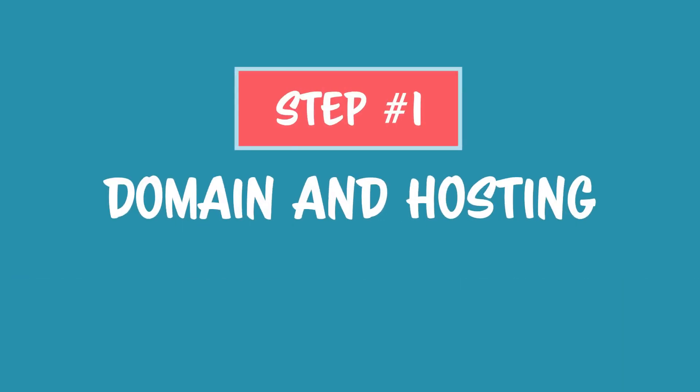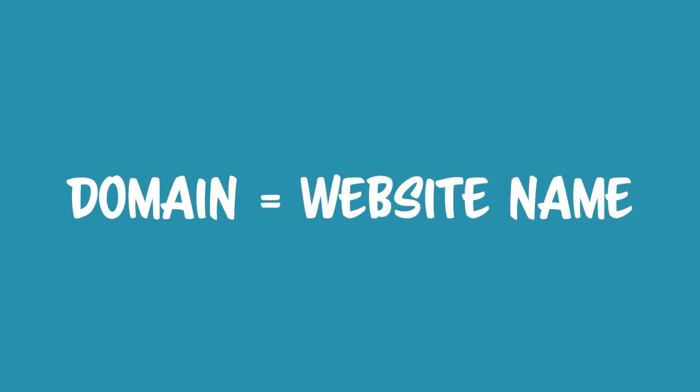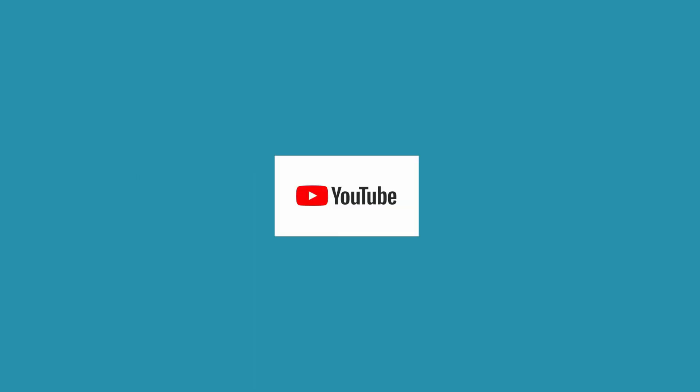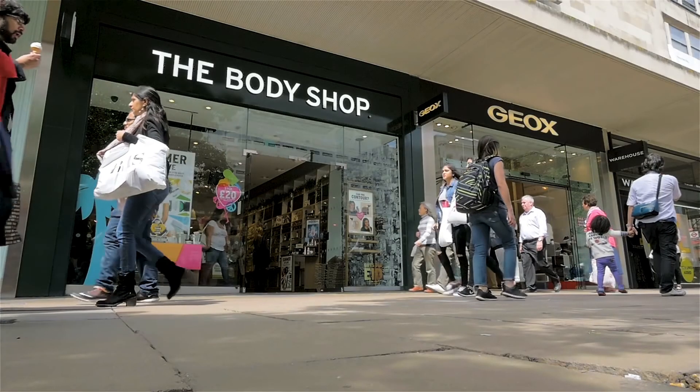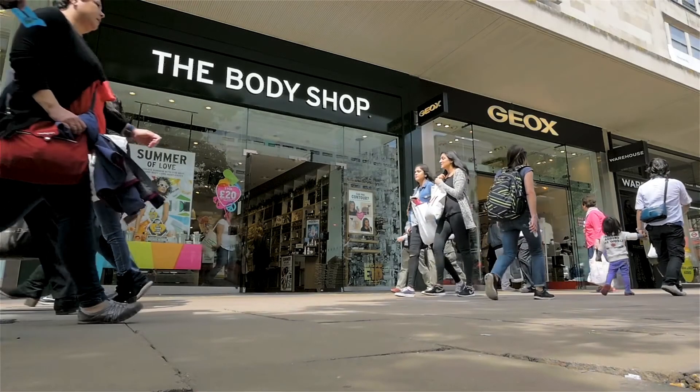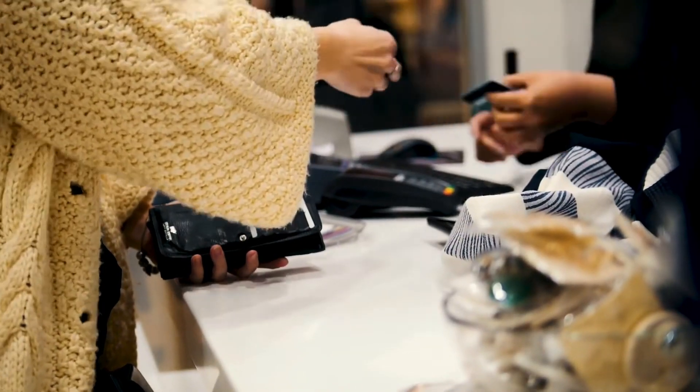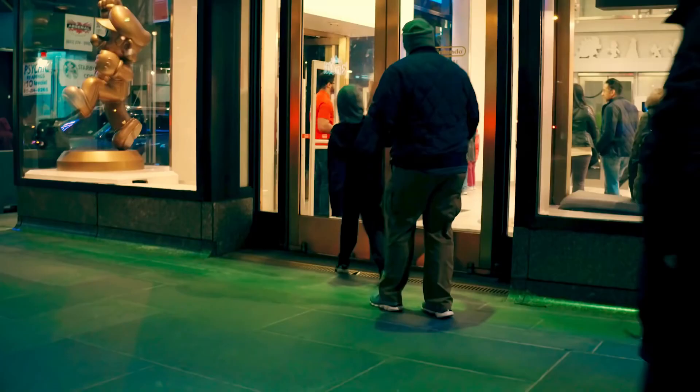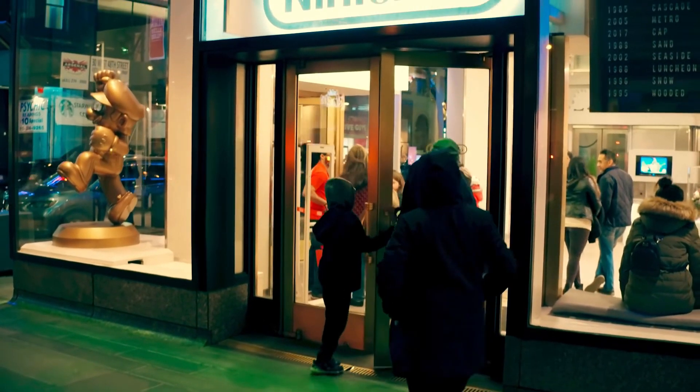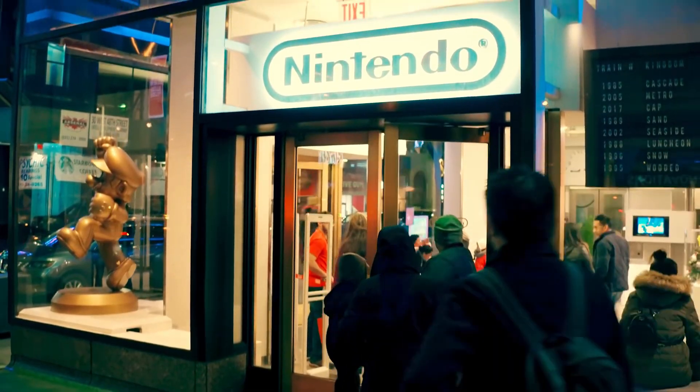Step number one: you need a domain and hosting to blog. The domain is the name of your website, also called a URL. So the domain for YouTube is youtube.com. Think of hosting like the physical store for your new website — we're essentially buying a space on the internet for our business so that people can visit you. This combination of getting your own domain and hosting is how you start.